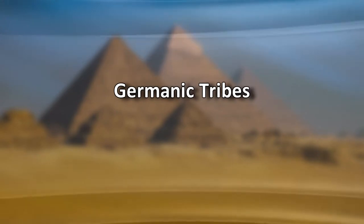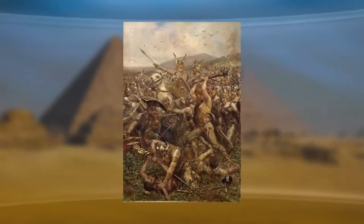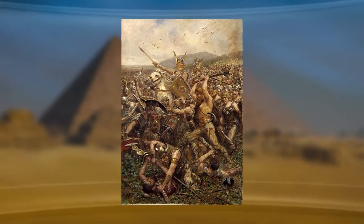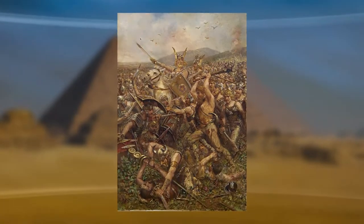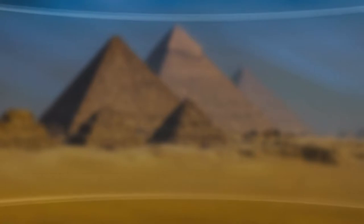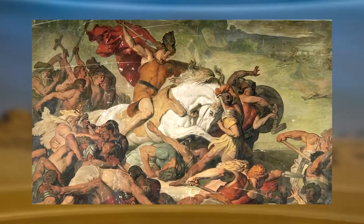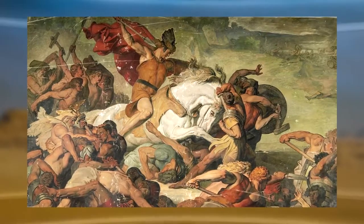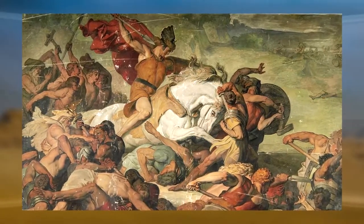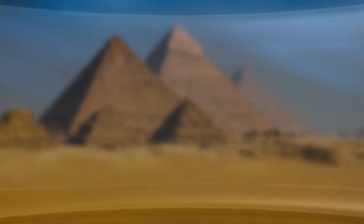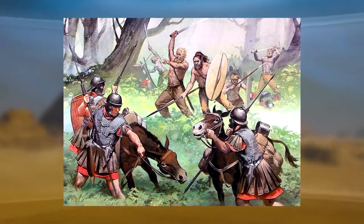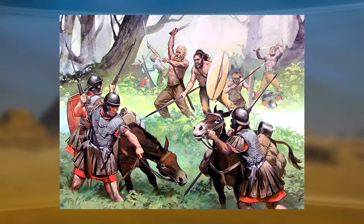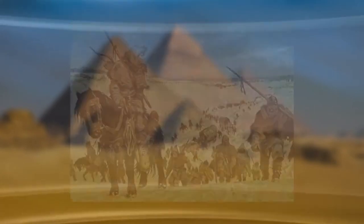The Germanic tribes were people of northern European origin. They moved to Britain, which is present-day southern Scandinavia and northern Germany, in the 5th century. The initial people have been classified into three tribes according to Bede's Historia Ecclesiastica Gentis Anglorum: Saxons, Angles, and Jutes, with historians thinking Franks and Frisians may also be included. Bede was an English monk, renowned scholar, and author, and this book earned him the title of Father of English History. The Anglo-Saxon Chronicle also mentions the movement of these tribes to Britain.